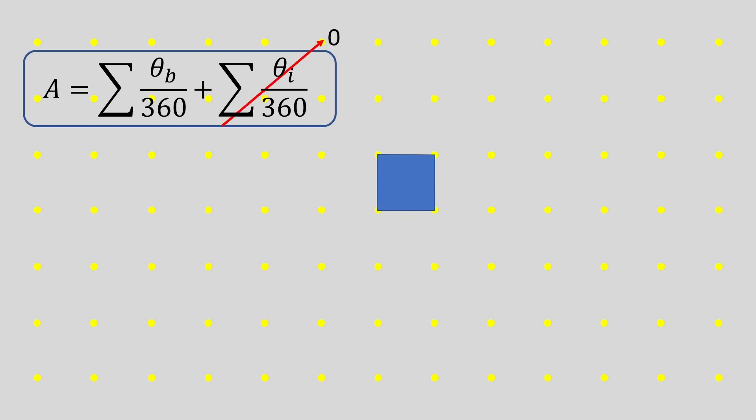So its area, according to our helper formula, would be the four 90 degree angles added together divided by 360. Since 4 times 90 is 360, that becomes 360 over 360, which is 1. And that matches the area of our blue square.